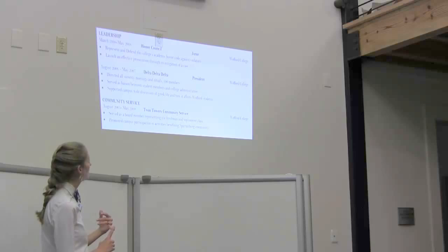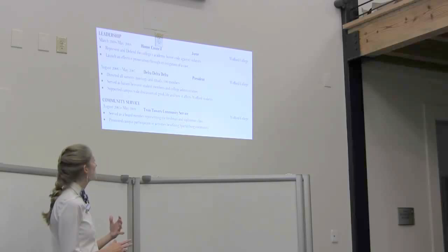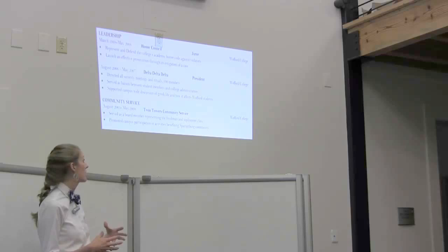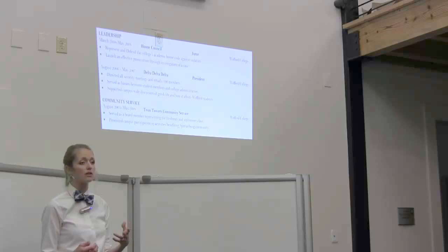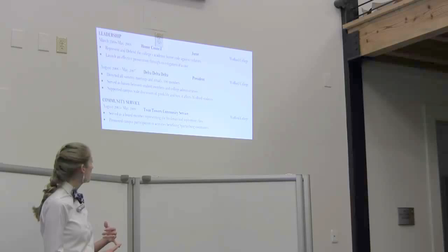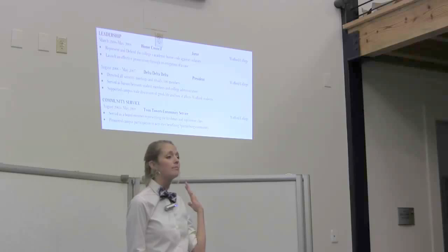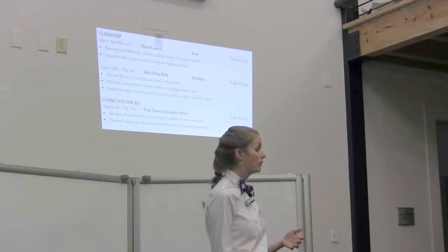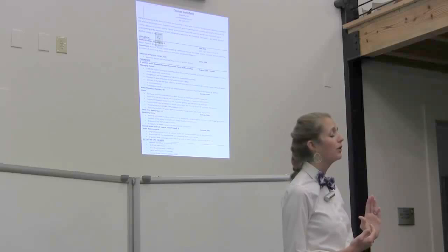Next is her leadership and community service. So, these are her activities. These are the things that she's involved in, and she's highlighting those. And again, you can see that it's very specific about what she did. Directed all sorority meetings and rituals from 100 members. Served as a liaison between student members and the college administration. So, this is someone that had to interact with the upper echelon of Wofford's administration. Supported campus-wide discussion of Greek life and how it affects Wofford students. So, again, showing that really taking leadership and gaining experience. Served as a board member. Promoted campus participation and activities benefiting Spartanburg community. So, again, these could be better bullets. When you talk about serving and giving back, how exactly were you doing that? So, again, be detailed.